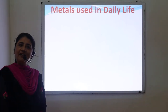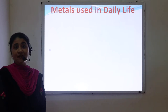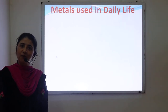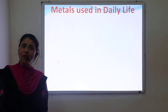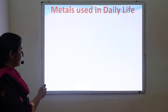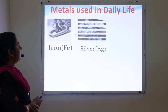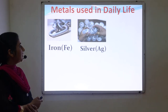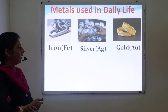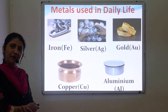In our daily life we use different things that are made up of metals and non-metals, and they play a very important role in our daily life. Some common examples of metals used in daily life are iron, chains, coins made up of silver, jewelry made up of gold, and utensils made up of copper and aluminum.